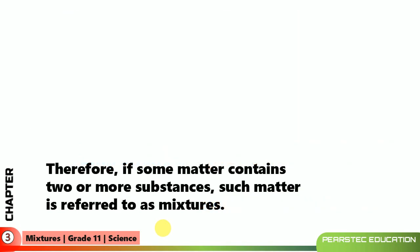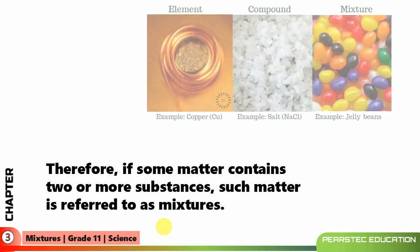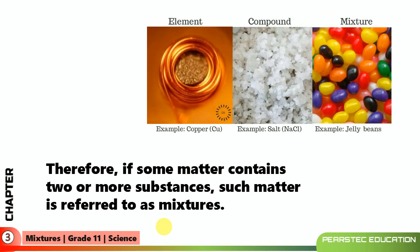If some matter contains two or more substances, such matter is referred to as a mixture — something like copper as an element, a compound like sodium chloride, and a mixture is something very similar to jelly beans, where you can see many different kinds together. That is a mixture.